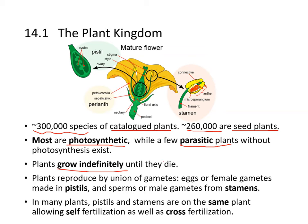Plants grow indefinitely until they die. They reproduce by a union of gametes — eggs or female gametes that are made in pistils. The top part of the pistil is called the stigma, the middle part is the style, and the ovaries are located at the bottom. The sperm or male gametes are produced from stamens, which possess the anther that produces microsporangia or gametes — the sperm. In many plants, pistils and stamens are on the same plant, allowing self-fertilization as well as cross-fertilization.